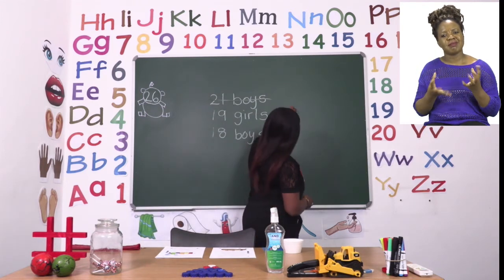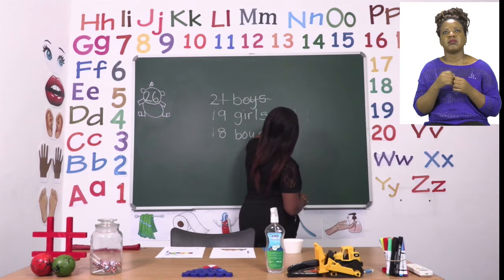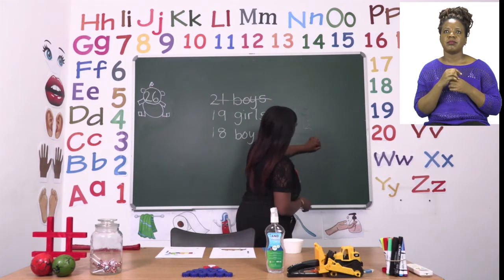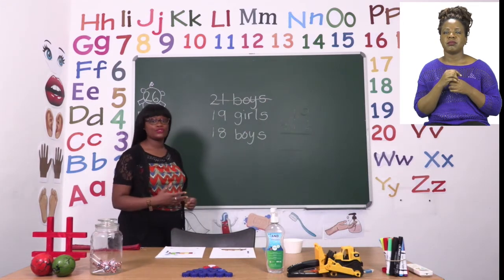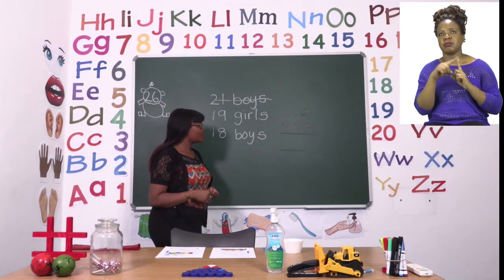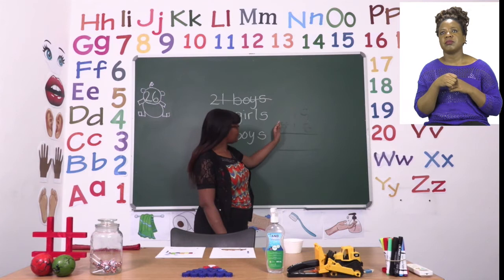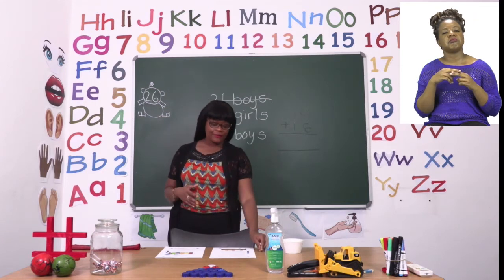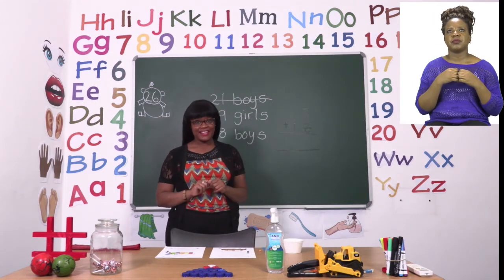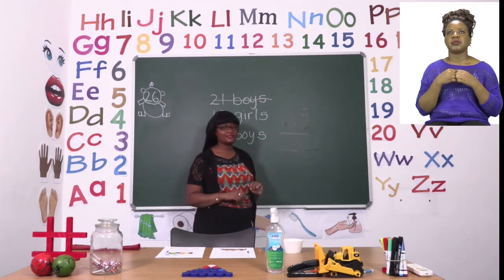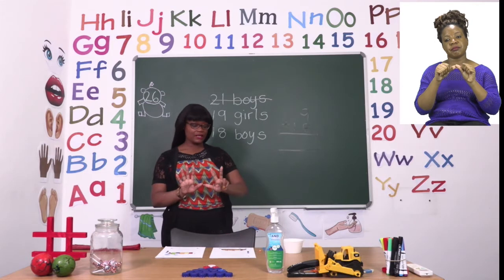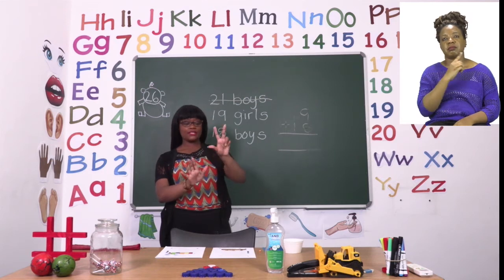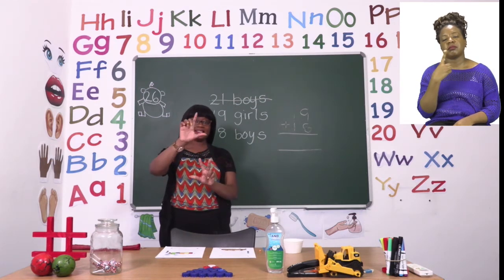So what we are going to do, since we want to find out how many children came altogether, we are going to add. We are going to say 19 plus 18. Once we have our answer we can write a sentence about how many children came to the party. We are going to start by saying 9 plus 8. You can use your counters, you can use your fingers — anything you feel comfortable with. We are going to use our fingers today. So we are starting from 9. 9 is already there, and then we have our 8 fingers. And we are going to say 10, 11, 12, 13, 14, 15, 16, 17.